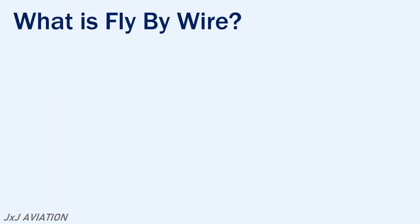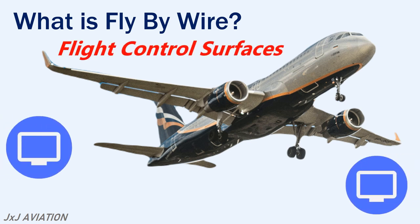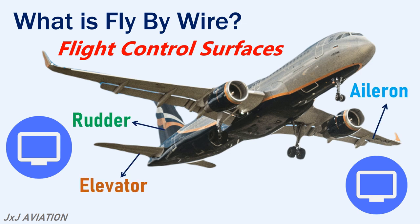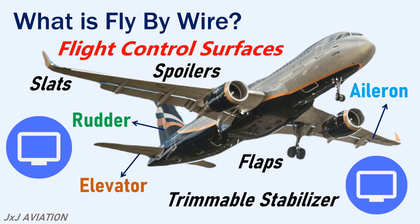First, let's see what is meant by fly-by-wire. Fly-by-wire is a system which uses computers to move different flight control surfaces. It is normally used for the deflection of primary control surfaces such as the elevator, rudder, and aileron. It may also be used to move different secondary flight controls such as spoilers, flaps, slats, and trimmable stabilizers.